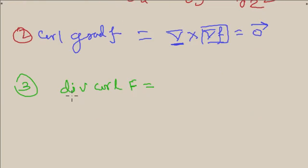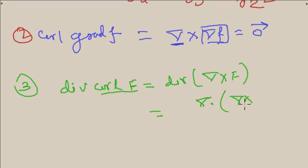Now the third one is div curl f. Div of curl of f, if you expand this, is del dot del cross f. Del cross f is perpendicular to del, so dot multiplication of two perpendicular vectors results in zero, so the value is zero.